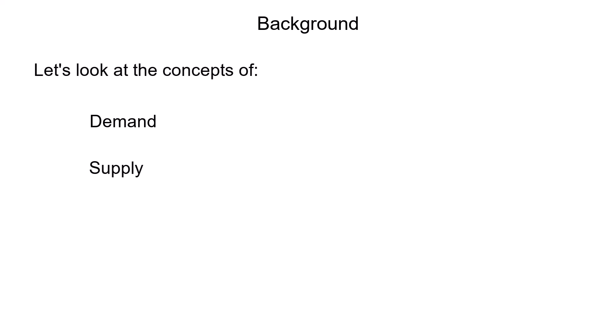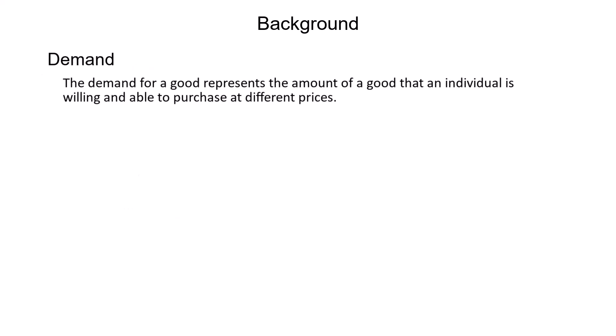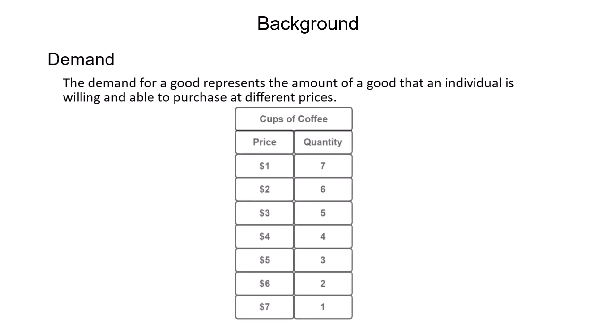Before looking at a typical problem statement, let's look at the concepts of demand, supply, and equilibrium in a supply and demand model. The demand for a good represents the amount of a good that an individual is willing and able to purchase at different prices. Demand for a good may be represented as a schedule or a table of prices and their associated quantities. For example, a demand schedule for cups of coffee might look something like this.